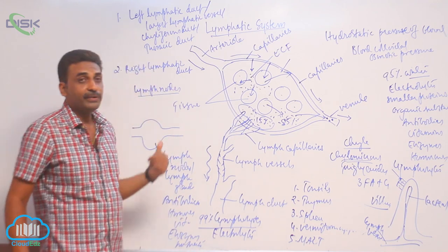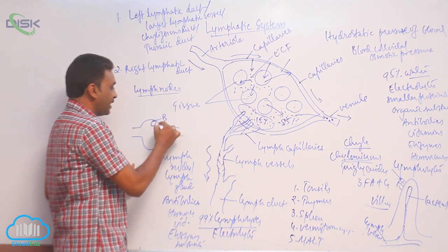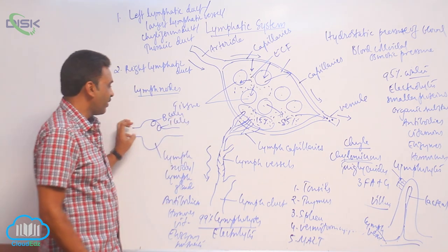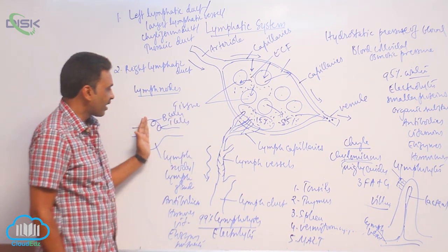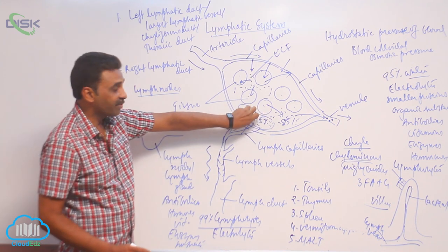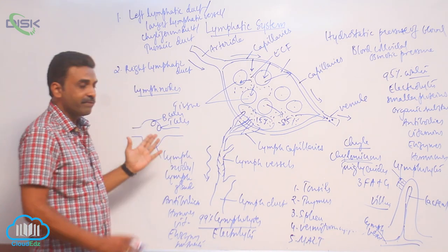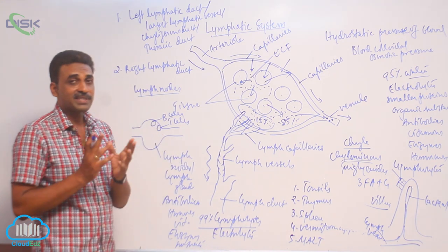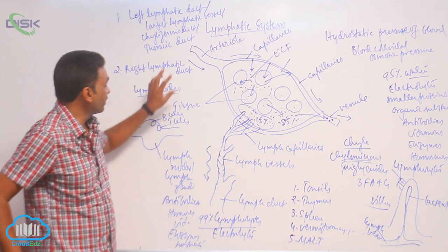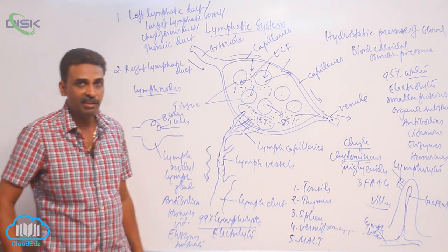Inside the lymph nodes you can see B lymphocytes and T lymphocytes — B cells and T cells — waiting. When microbes enter through the lymph vessels or lymph ducts, the B cells and T cells present in the lymph nodes destroy the microbes. That is the function of B cells and T cells which are waiting inside the lymph nodes.